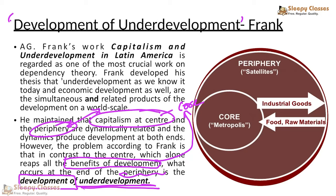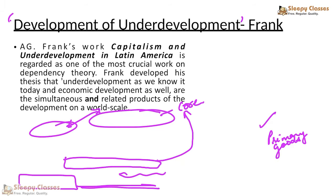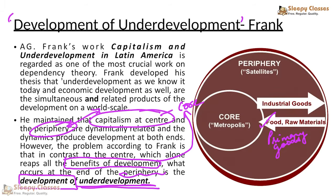Why? Because from the periphery comes food and raw material — basically your primary goods. And what does the core do? It supplies industrial or manufactured goods, technology, and other products. So your core becomes the metropolis and the periphery becomes the satellite.